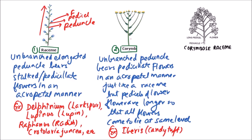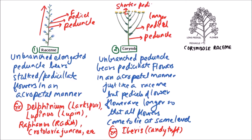We can observe in the diagram that this is the peduncle and these are the pedicels. Longer pedicels are found in the lower flowers while shorter pedicels are in the upper flowers, so that all flowers come to the same level.